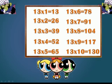Kids, I repeat table of 13, please follow me. 13 ones are 13. 13 twos are 26. 13 threes are 39. 13 fours are 52. 13 fives are 65. 13 sixes are 78. 13 sevens are 91. 13 eights are 104. 13 nines are 117. 13 tens are 130.